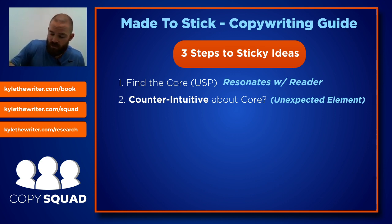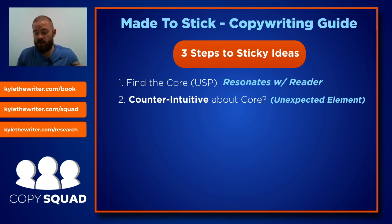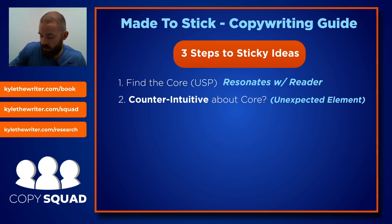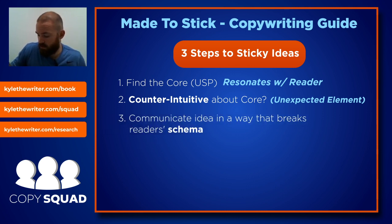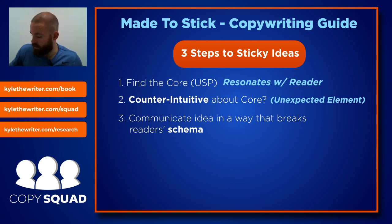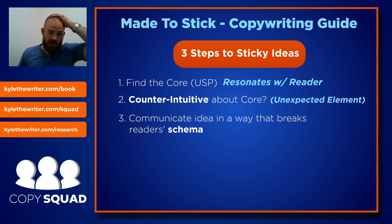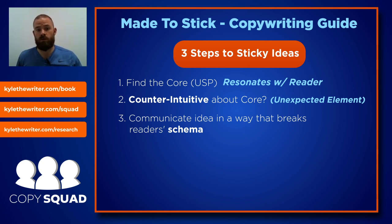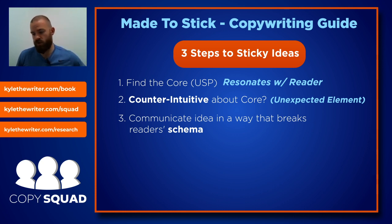There's a parallel I want to draw here. The third thing — once you locate and isolate your unexpected element — you need to communicate that idea in a way that breaks the reader's schema. The word schema basically means the laws of that person's world, what they believe to be true. So: find the core, find the counterintuitive or unexpected part of the core, then communicate that idea in a way that breaks your reader's schema.